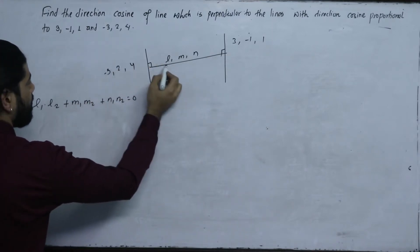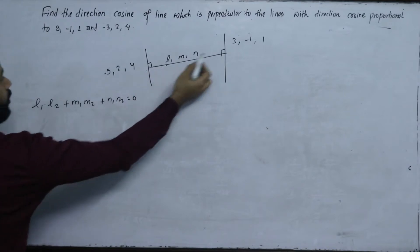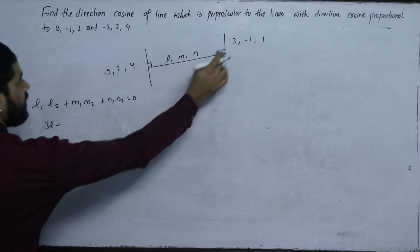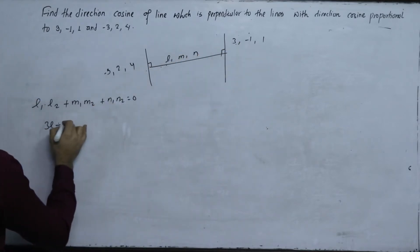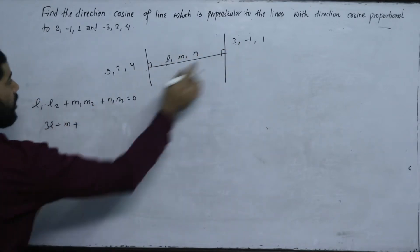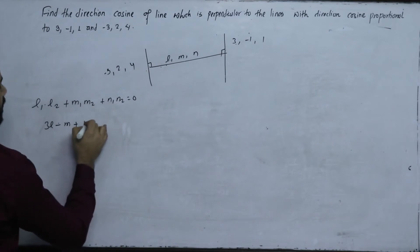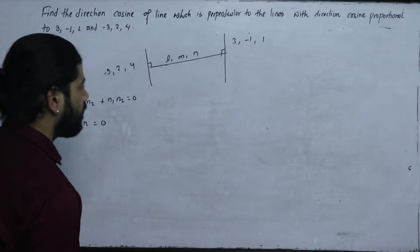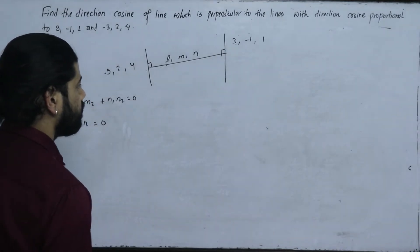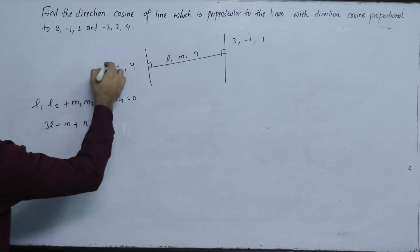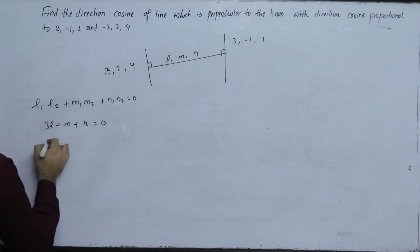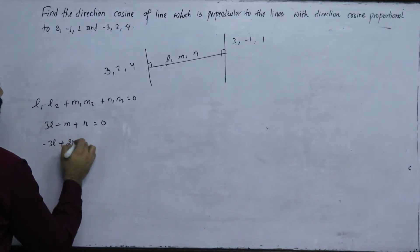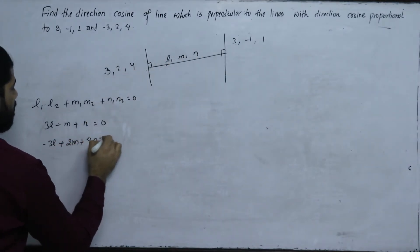Applying the perpendicularity condition for the first line: 3 into L plus minus 1 into M plus 1 into N equals zero. For the second line: minus 3 into L plus 2 into M plus 4 into N equals zero.